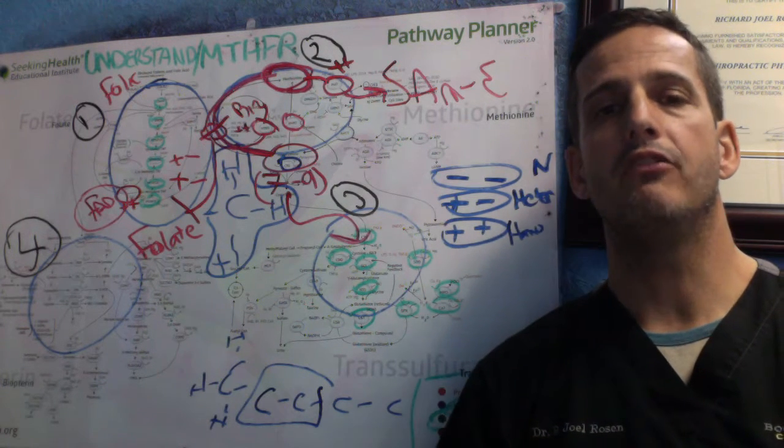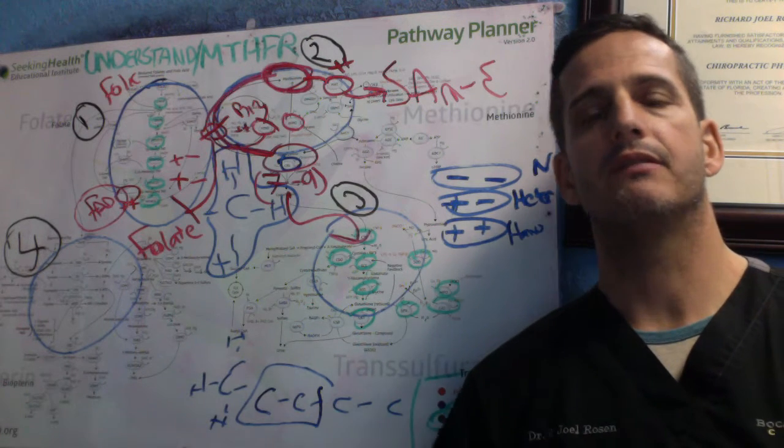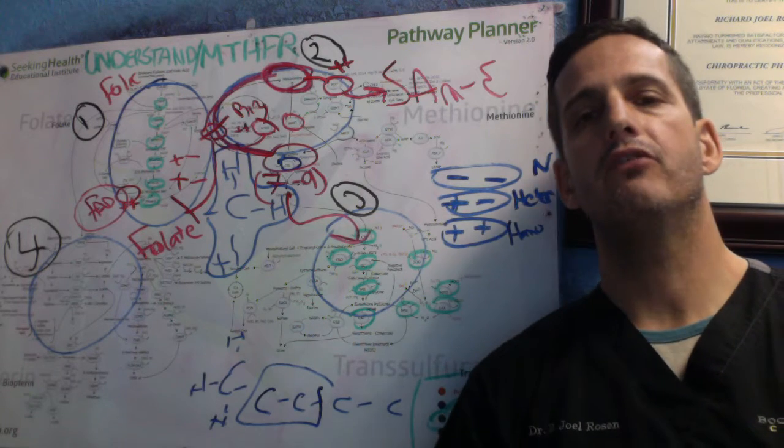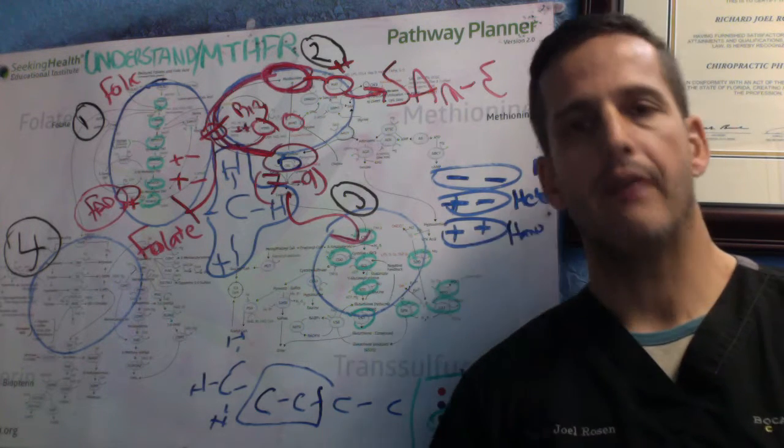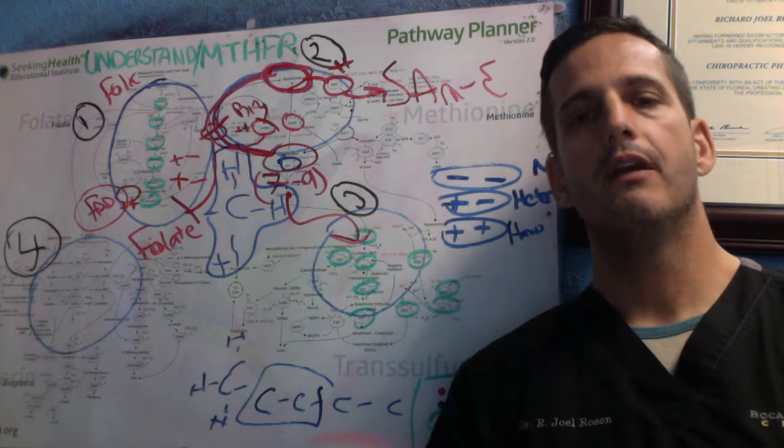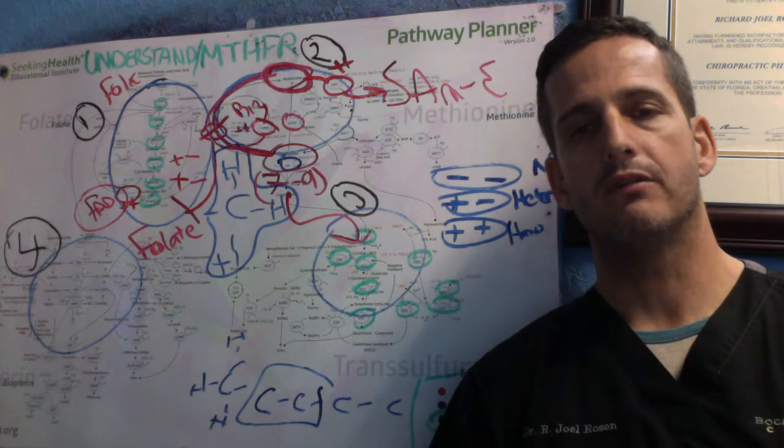And our ATP shuts down. And therefore, we get this negative cycle of methylation is slowing down. ATP generation is slowing down, causing methylation to slow down, causing ATP generation to slow down. So it just negatively reinforces each other.